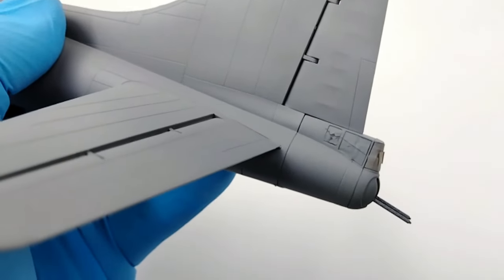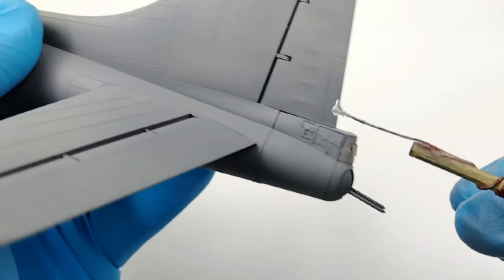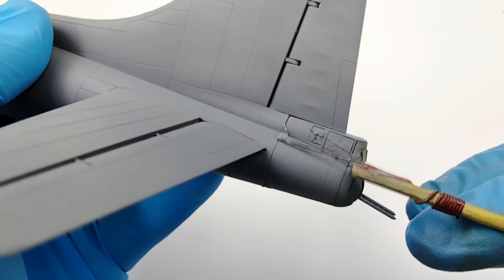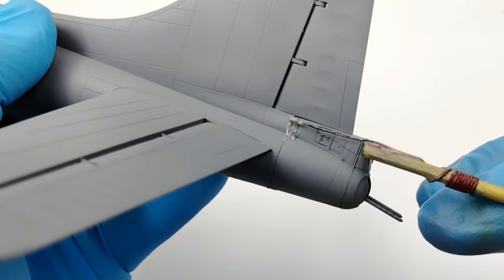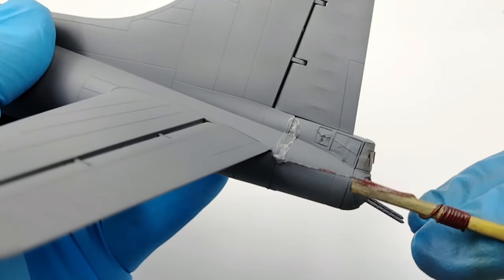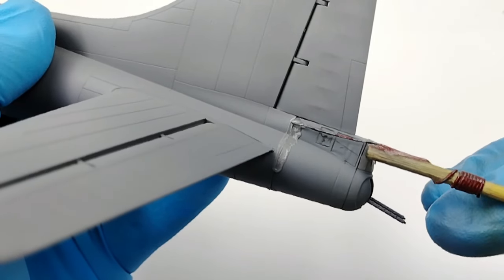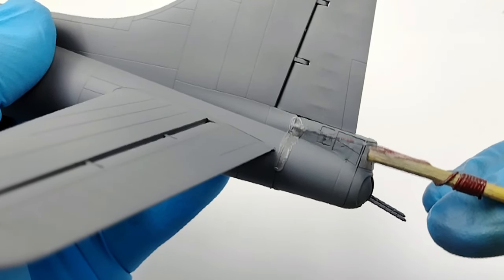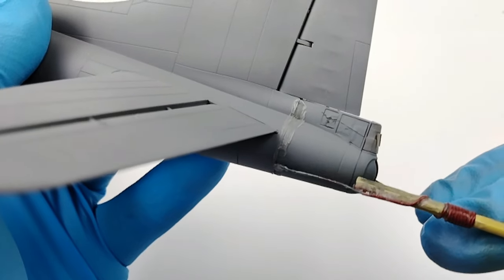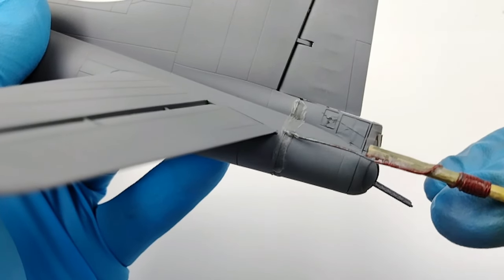When it comes to dealing with a step between two parts, this is where I find gel CA glue to really come in handy. Because of its long work times and the ability to shape the glue into the step, I'm able to minimize how much I'm going to have to sand by shaping the glue in such a way that it will actually blend the two pieces together when it comes to sanding.